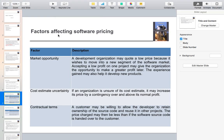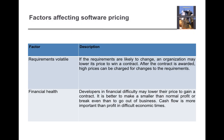The fourth factor is requirements volatility. If requirements are likely to change, an organization may lower its initial price to win the contract. After the contract is awarded, high prices can be charged for changes to the requirements. Since requirements keep changing, a company can start with a low price and keep increasing it as requirements evolve.